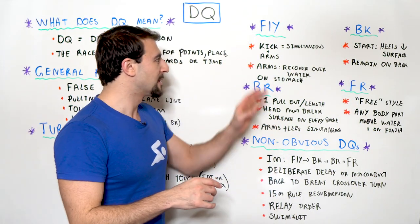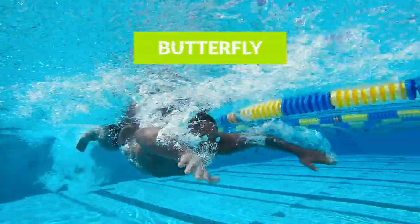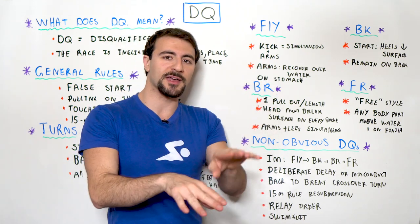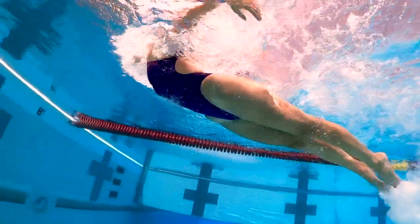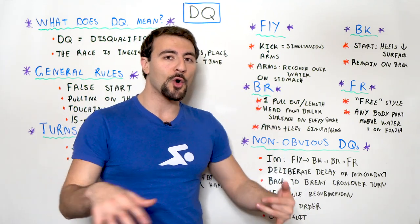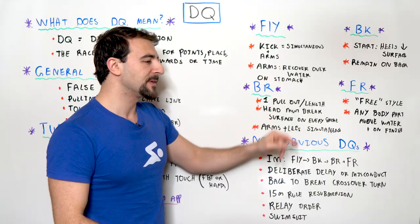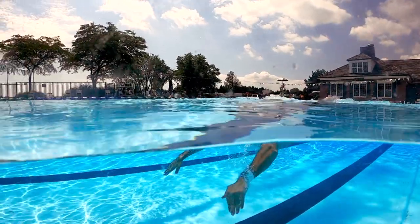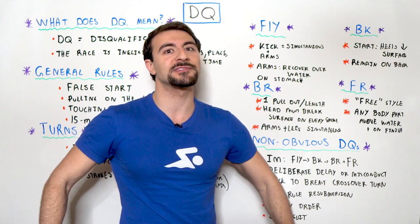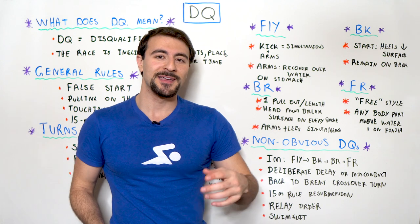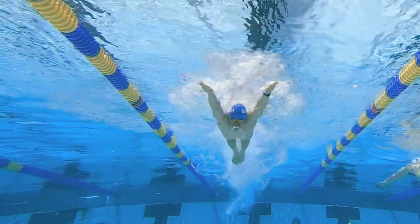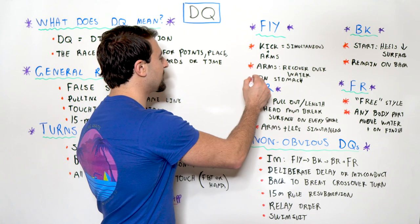Let's go through each stroke. Starting with butterfly: your kick and your arms need to move simultaneously. Unlike freestyle's flutter kick, in butterfly you have a dolphin kick, and if your feet are separated at any point during the kick it's an automatic disqualification. Your arms must also move together and come over the water on the recovery — your elbows have to be above the surface of the water. You also have to swim on your stomach; you can't swim butterfly on your side or on your back.